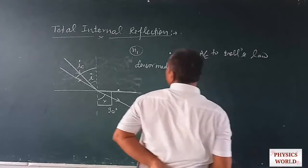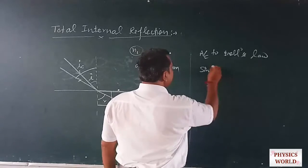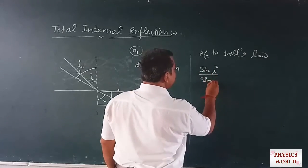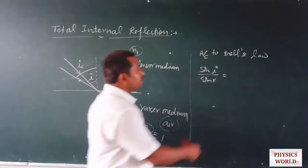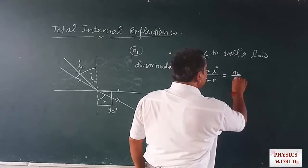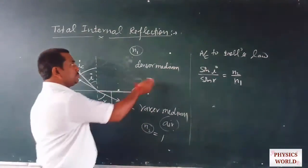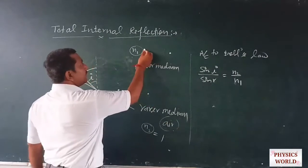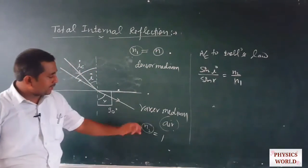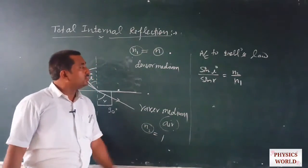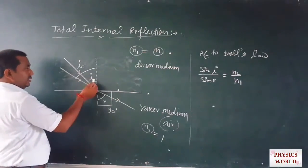According to Snell's law, when any light ray is transmitted from one medium to another, sin(i) divided by sin(r) equals the refractive index of the second medium divided by the refractive index of the first medium. If we take the second medium as air and the first medium as glass or water, the refractive index of the denser medium is treated as n and the refractive index of air is treated as 1.